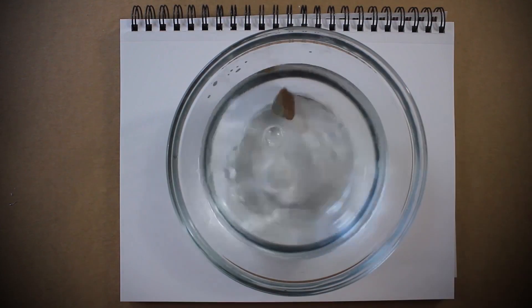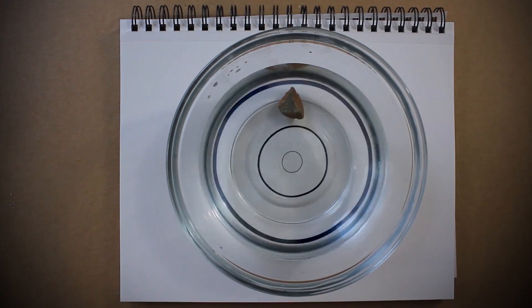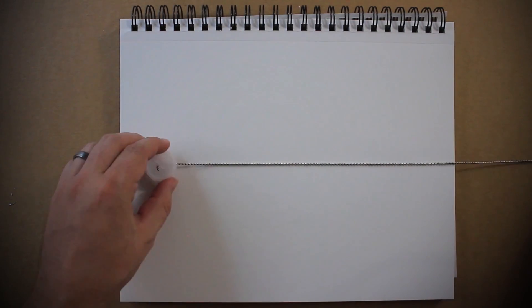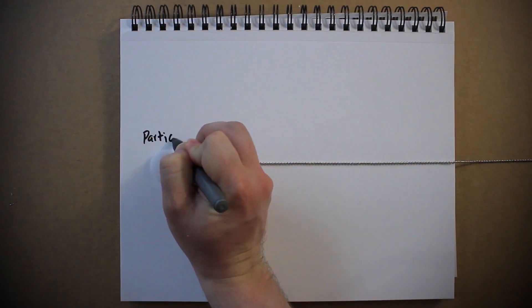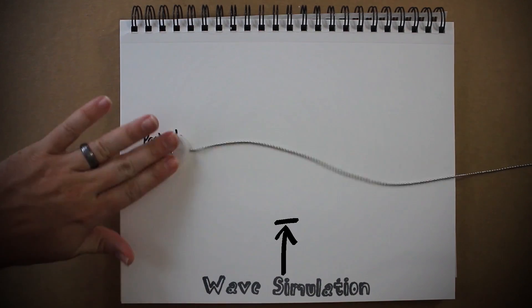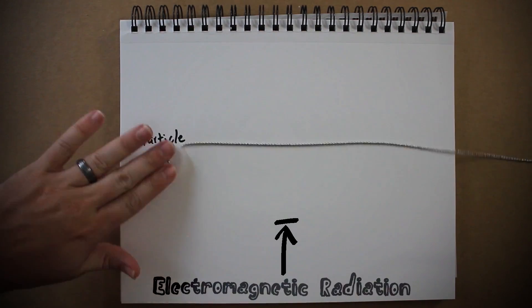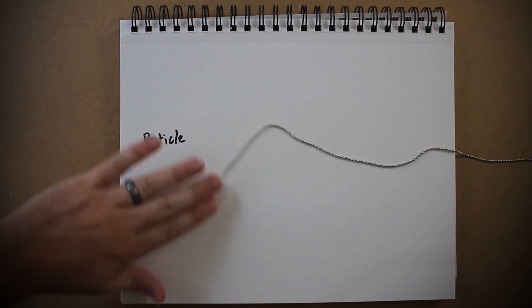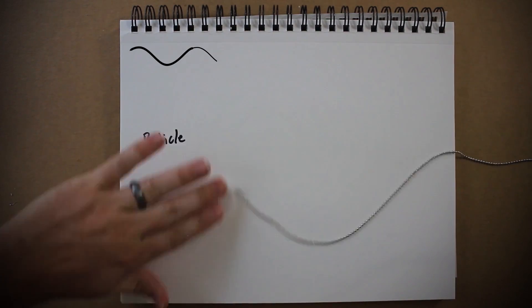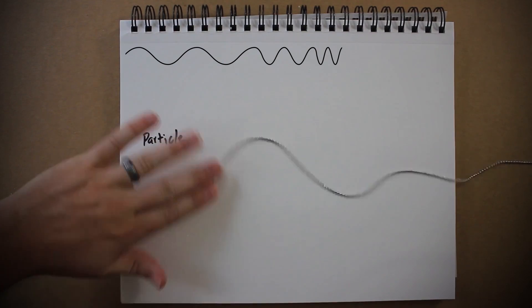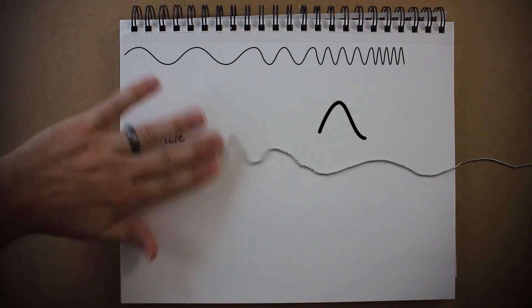When you drop a pebble into water, waves radiate from the point at which the water was agitated, and on a microscopic level, things work similarly. When a particle is jiggled, waves from this force radiate from it. These radiating waves are known as electromagnetic radiation, and depending on how much the particle is agitated, the length of the waves could either be further apart or closer together.